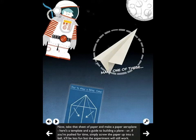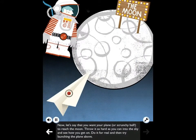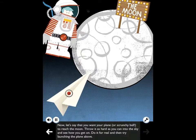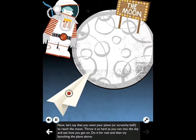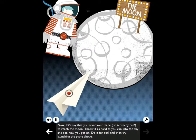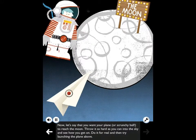Now, let's say that you want your plane, or scrunchy ball, to reach the moon. Throw it as hard as you can into the sky and see how you get on. Do it for real, and then try launching the plane above.